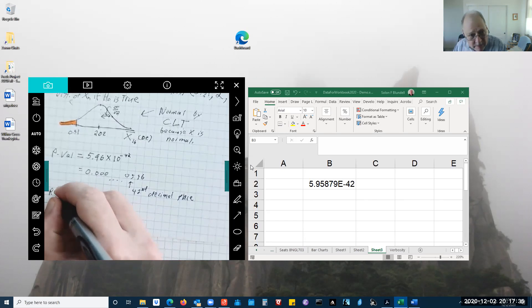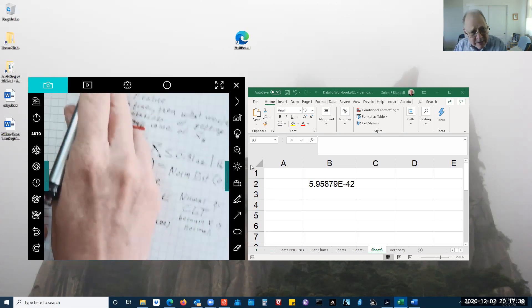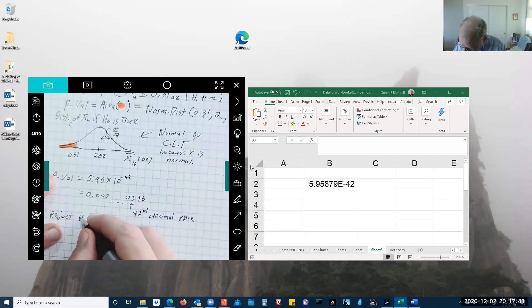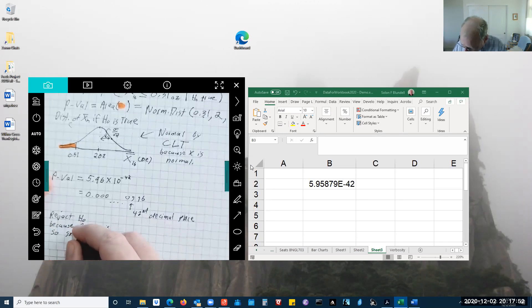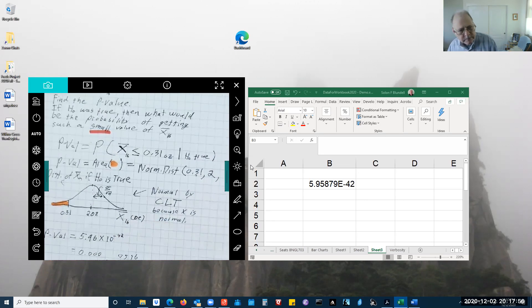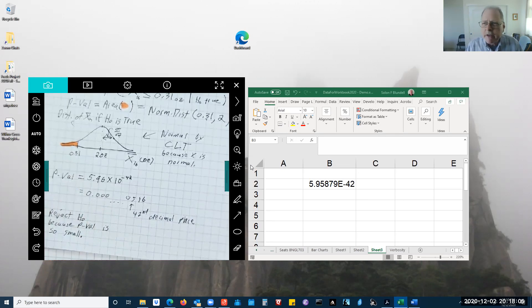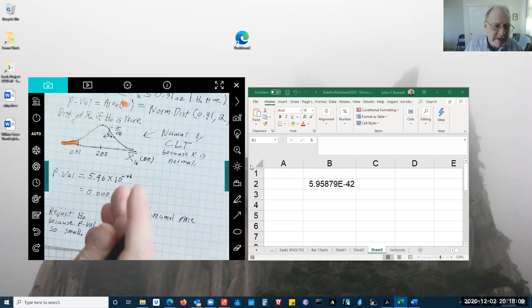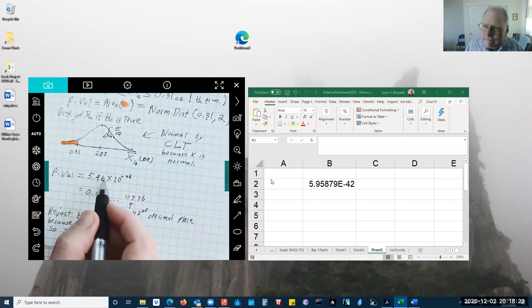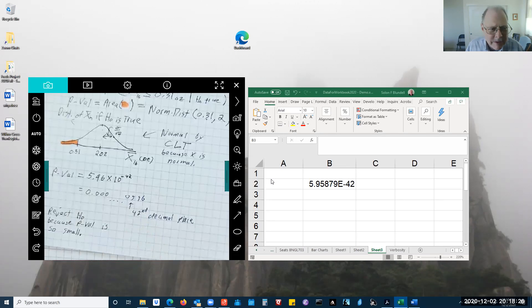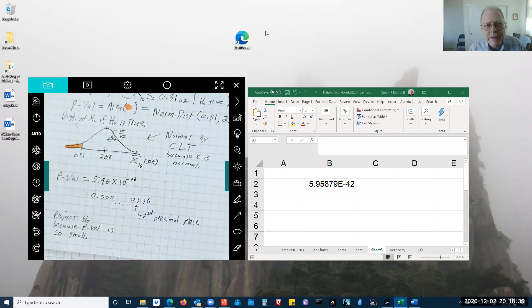So I'm going to reject this null hypothesis because the p-value is so small. Typically, your rejection criterion might be either if you get like less than 1% or less than 5%. Okay, maybe in a sociology journal they might think it's interesting if you got less than 10%, but anyway, this is just inconceivable that this was just luck. So all right, that's all for this topic.